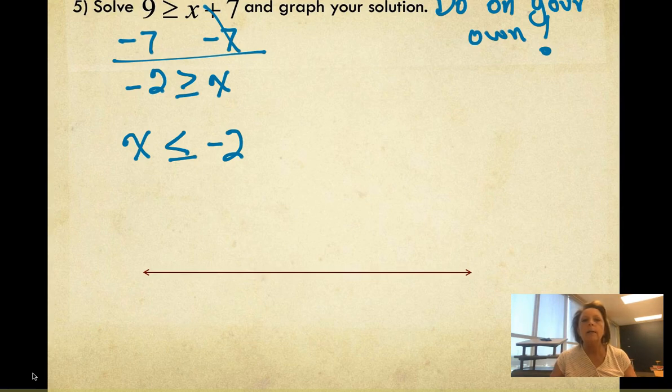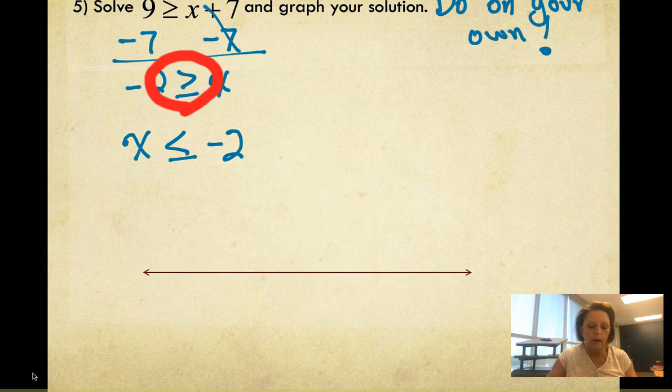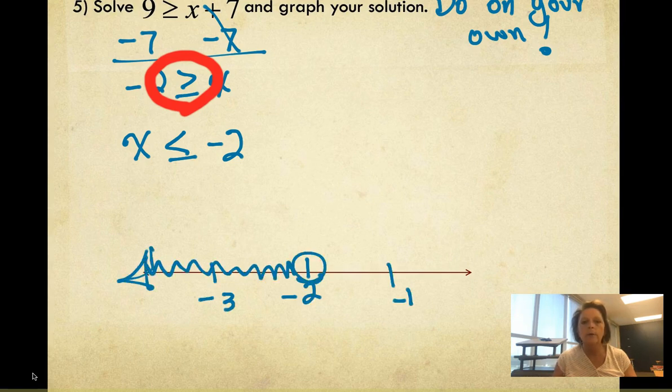So I'm going to rewrite this with x on the left and negative 2 on the right. In my original inequality, the inequality was pointing towards the x, so on my new one it also has to point to the x. I'm going to graph that with a closed circle shaded to the left.